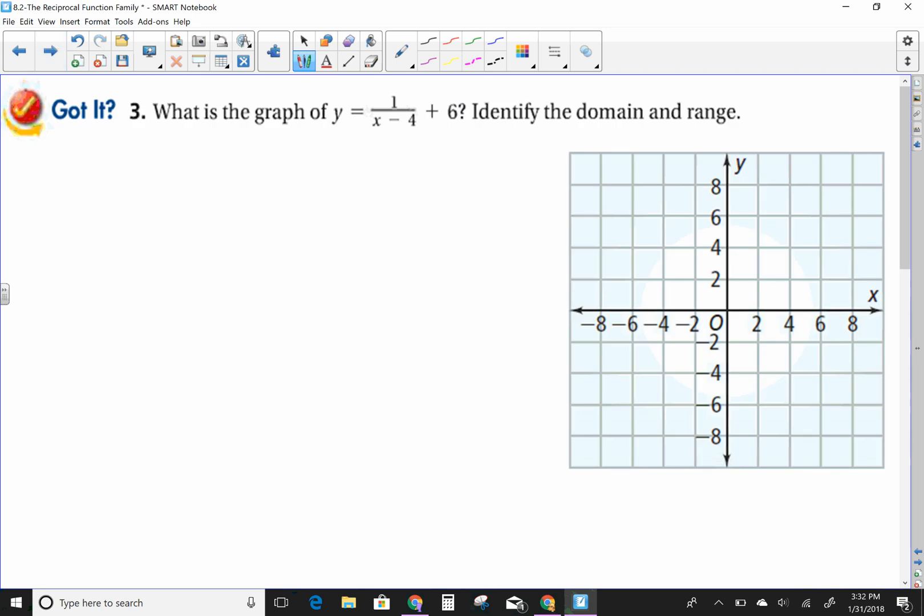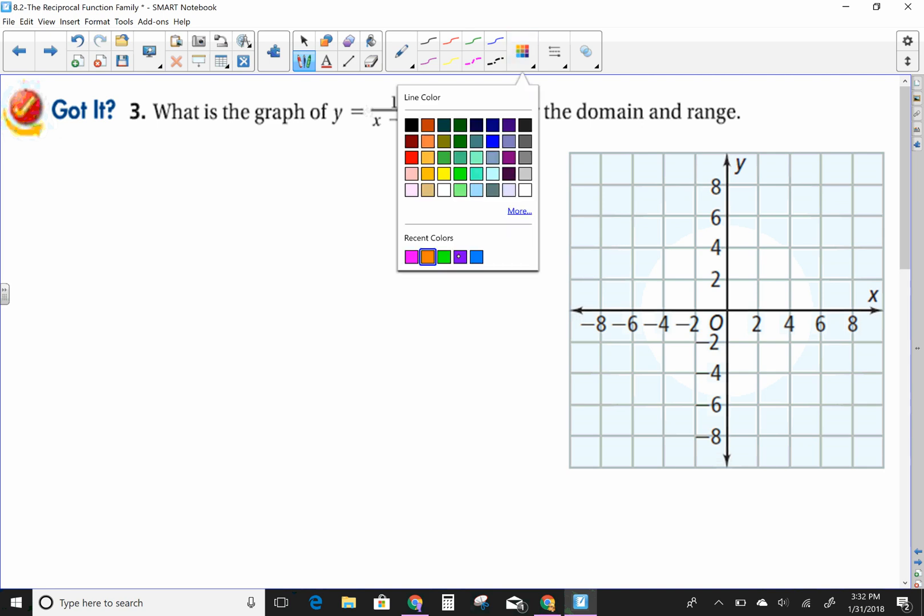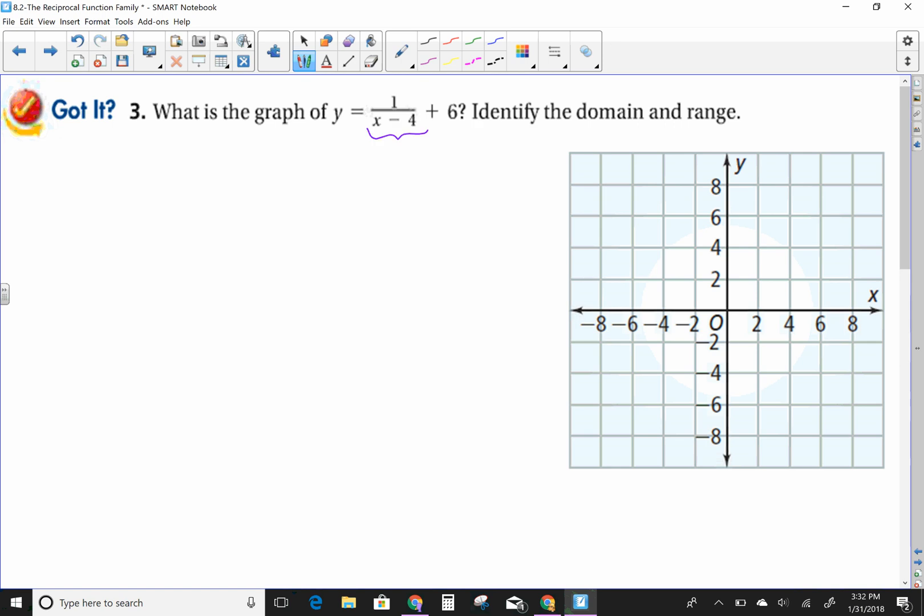So what is the graph of y equals 1 over x plus 6? Identify the domain and range. So the first thing you want to do, if I've got a plus or a minus, then my graph has been shifted. So let's look first at x minus 4. The 4 is with the x. When it's with the x, we do the opposite of what it looks like. So my graph has been shifted over 4 units, and now instead of x equals 0, it's x equals 4. Then I'm going to have my asymptote. So that's going to look like this.